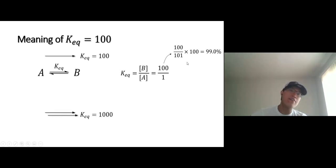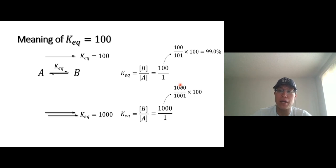Another example, let's say if an equilibrium has the equilibrium constant of 1,000, which means that at equilibrium, the concentration of the product over reactant is 1,000 to 1. That means if you do the math, the percent B, percent concentration of B, the product is going to be 1,000 over 1,001 times 100. That's 99.9%.